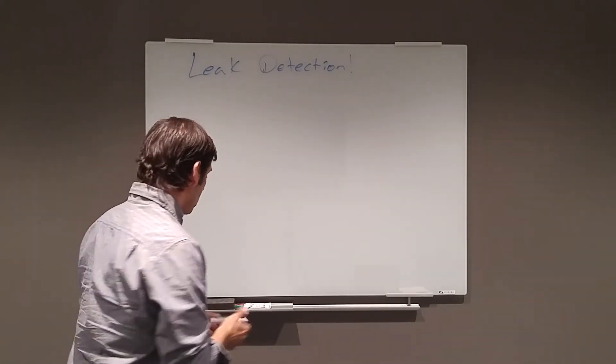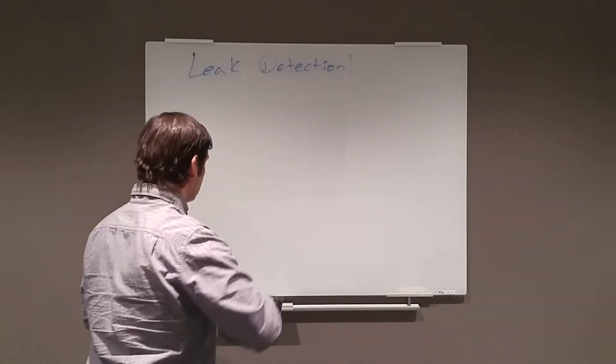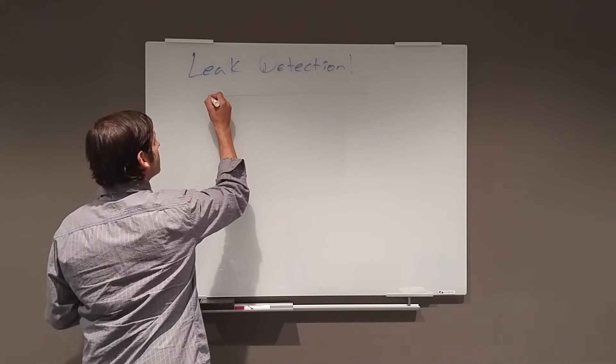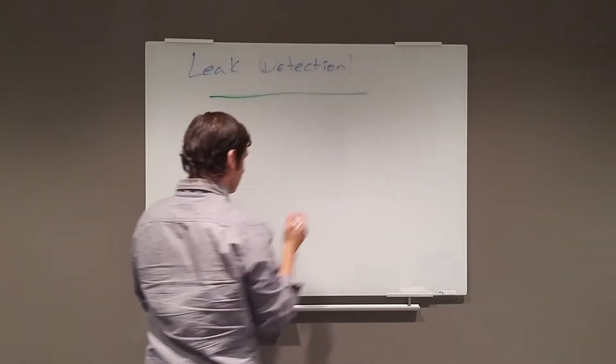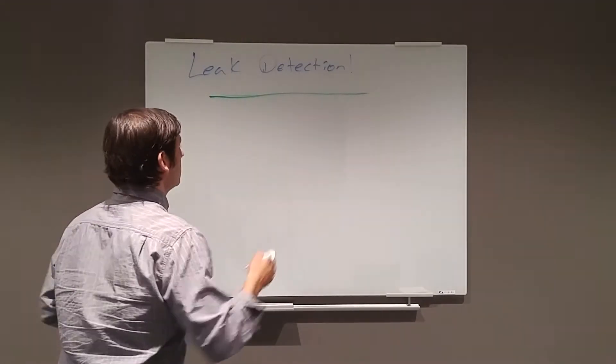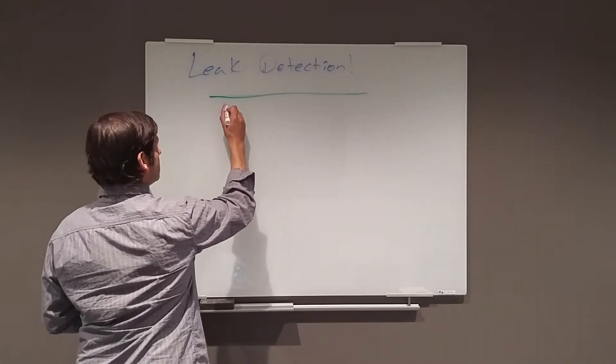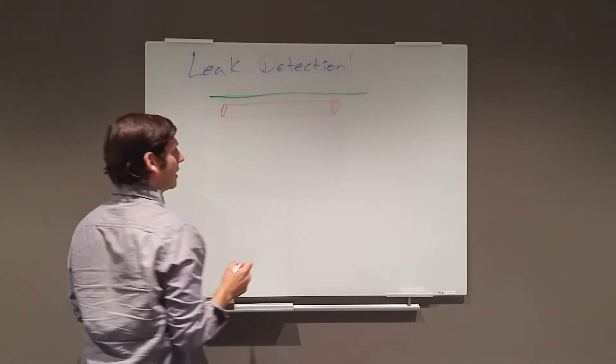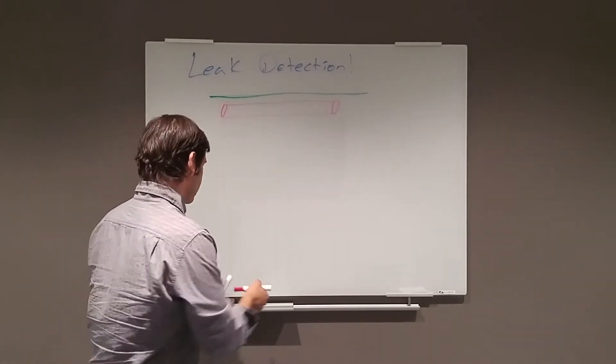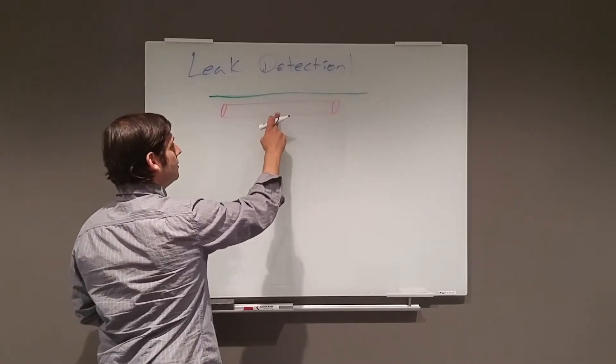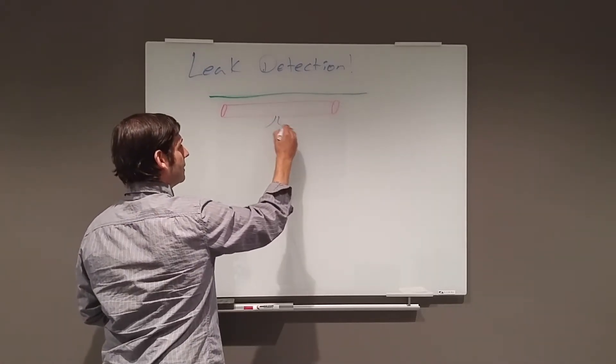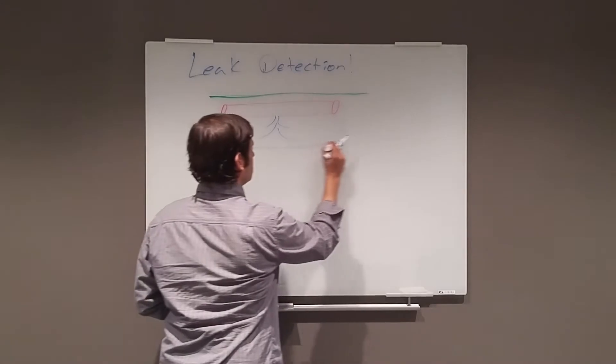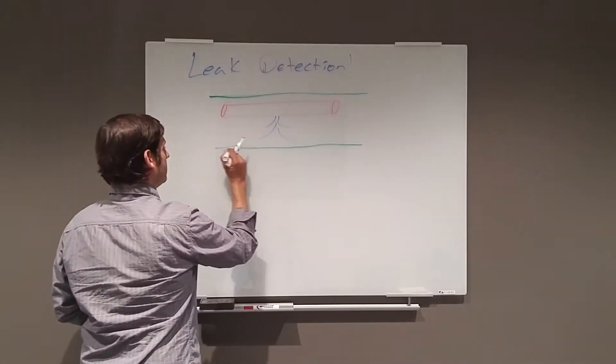And so we're going to draw our ground surface. So here's the ground, make it a little thicker. Here's your ground surface. Here is your pipe. And excuse my artistry. Let's say in this pipe you have a leak. And so here's the water coming out of the leak. And then finally, here's the next geological layer below the pipe.